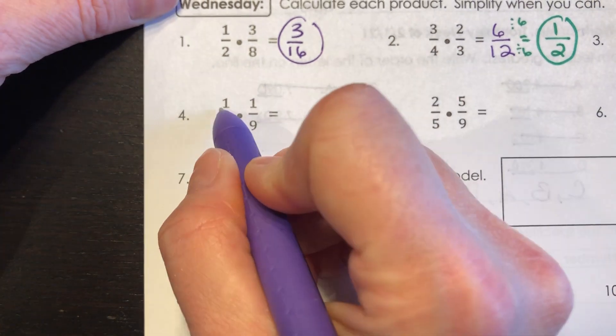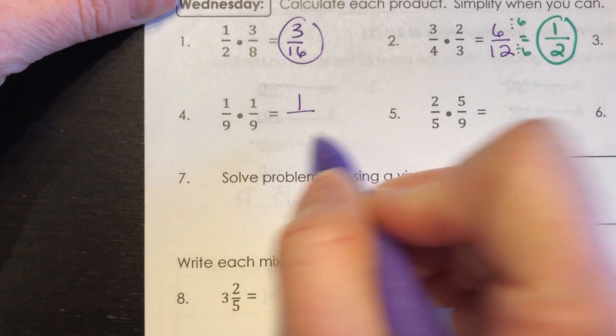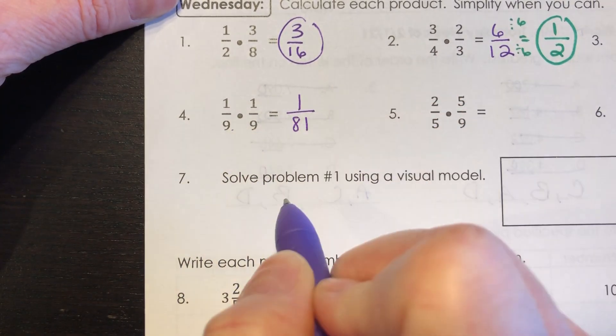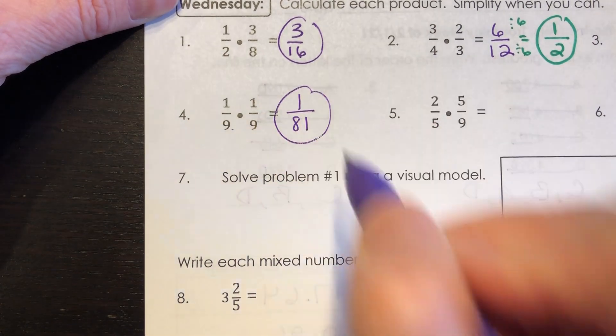For number 4, 1 times 1 is 1, 9 times 9 is 81. That is simplest form.